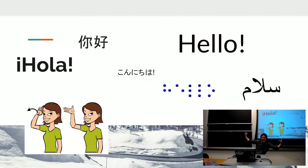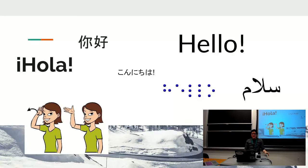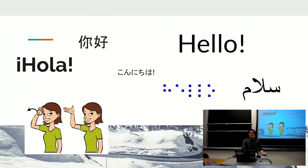This talk is about accessibility, but it's really about communication. Everyone has their own special way of saying hello, and when we're talking about accessibility, we're talking about how we communicate with somebody who has a barrier between them and how we usually interact with other people.